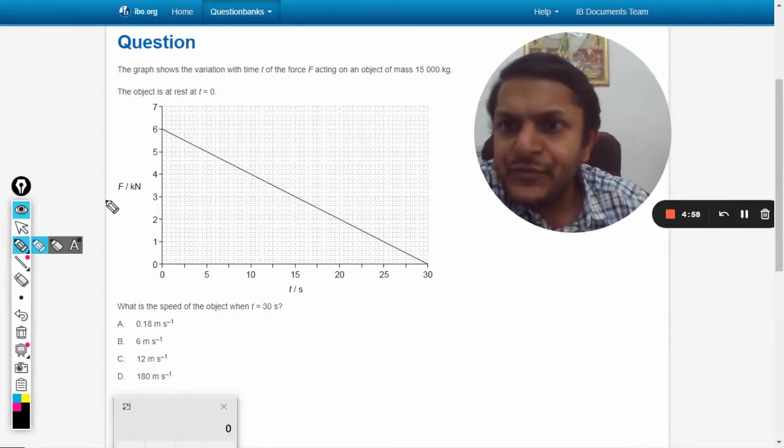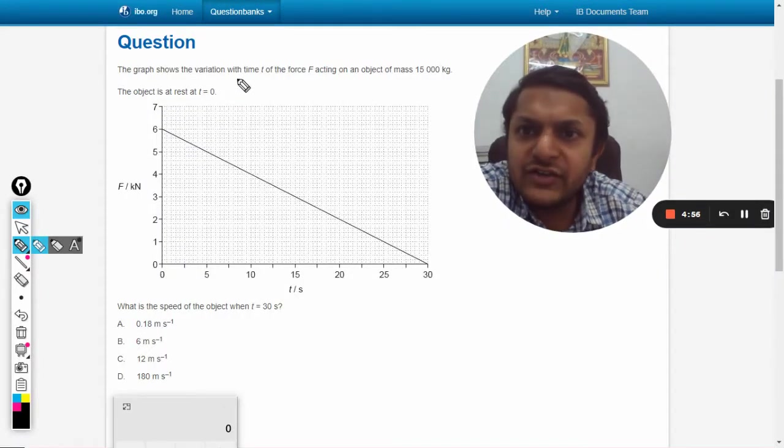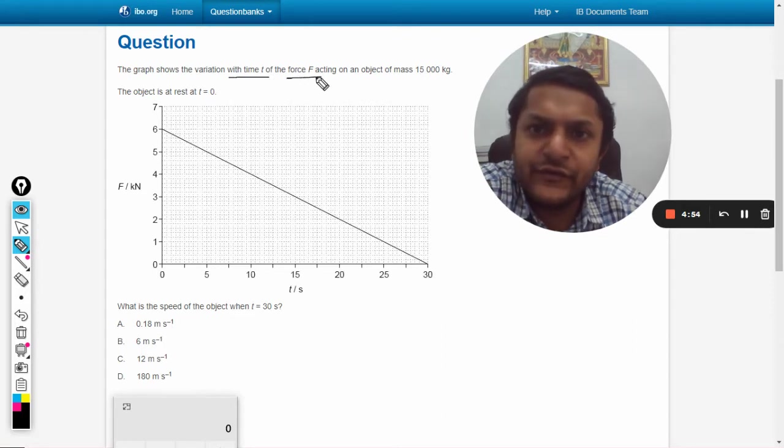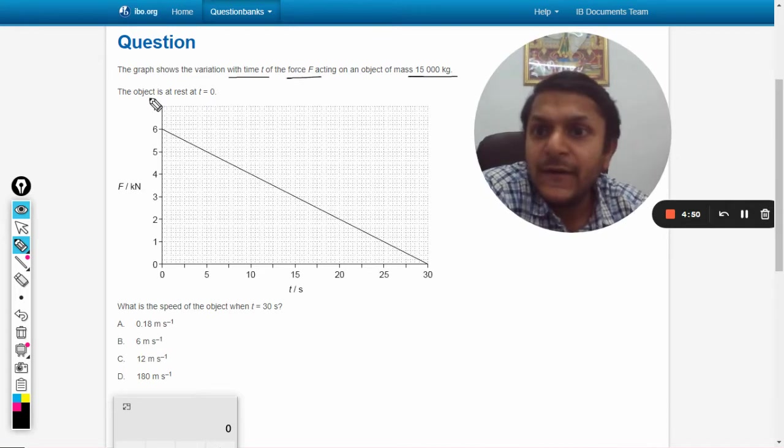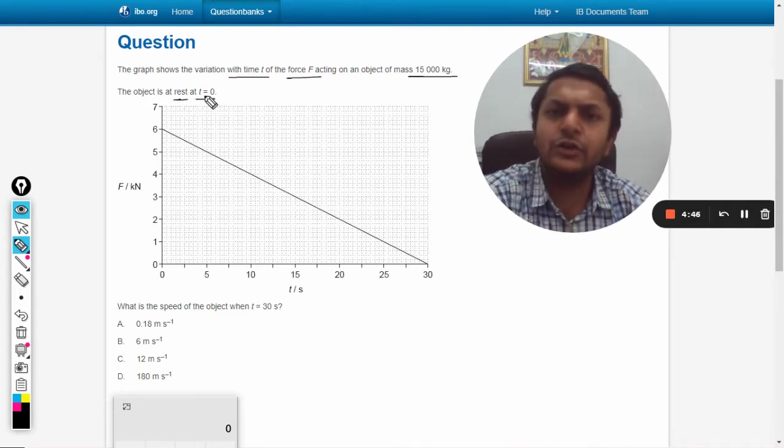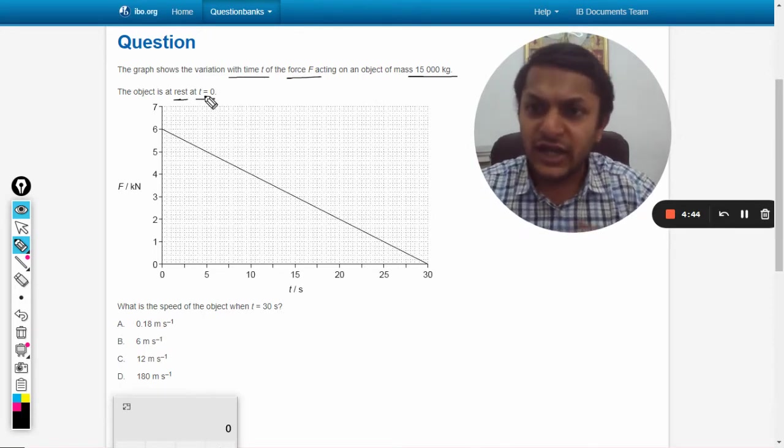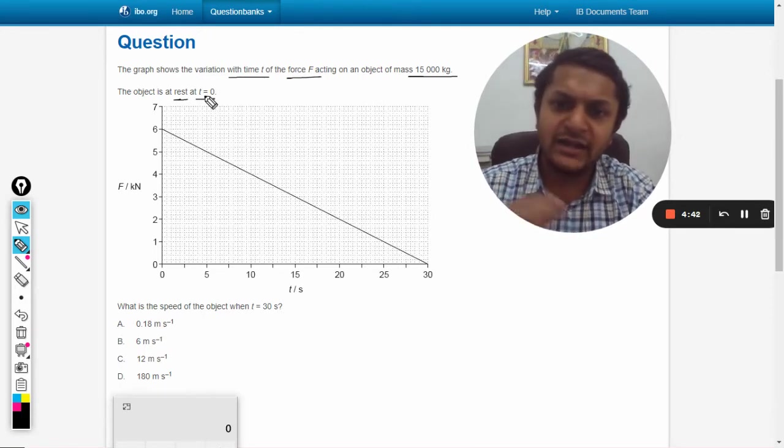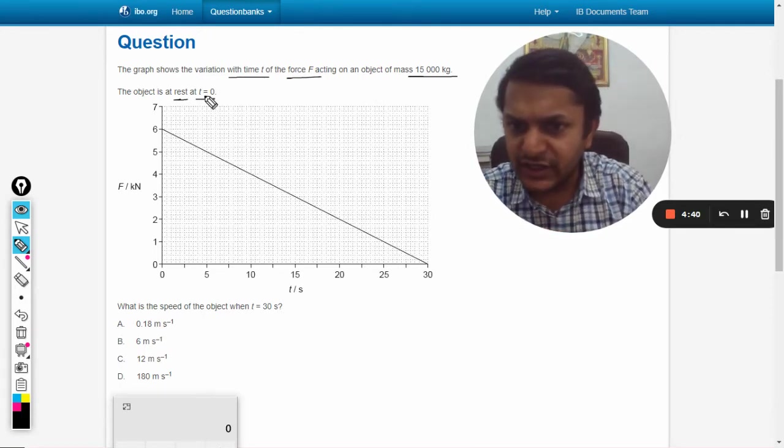In this question, the graph shows the variation with time t of the force f acting on an object of mass 15,000 kg. The object is at rest at t equals 0 initially. The graph is given between force and time, and we need to find the speed of the object when t equals 30 seconds.